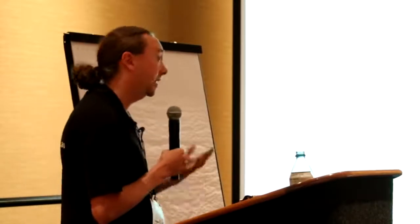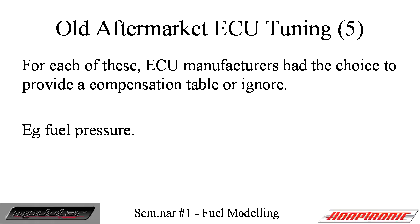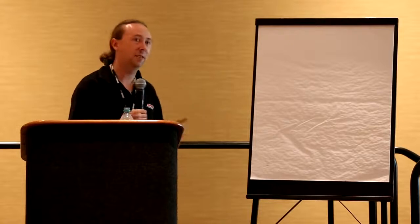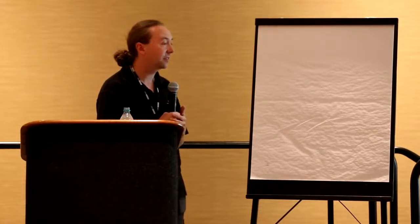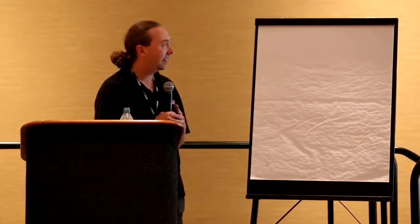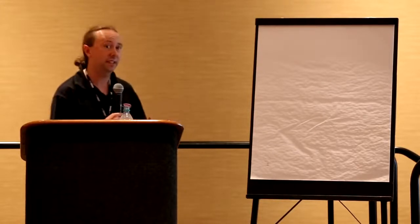For each of these variables, ECU manufacturers generally had the choice to either provide a compensation or correction table which the tuner could adjust, or to ignore the variable altogether. Fuel pressure is probably one of the biggest ones that's thought to be a constant, but when you actually start measuring it you find it's not actually all that constant at all. I actually discovered this when I was building a machine to test injectors — I had a pressure reg with a gauge on it and a single ID725 injector on it.